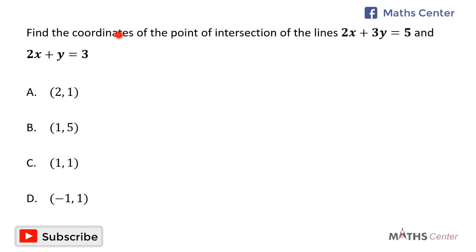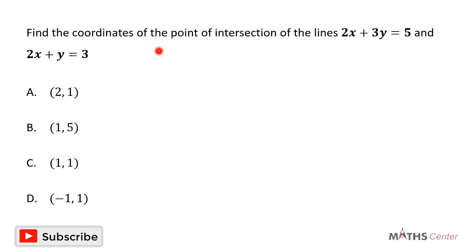The question wants us to find the coordinates of the point of intersection of these two lines. When two lines intersect, you can find the coordinates of the point of intersection by solving the equations of the two lines simultaneously. So here we are going to solve the equations of these two lines simultaneously.